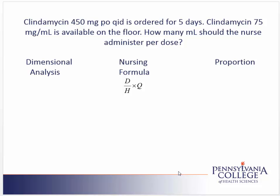We are doing a dosing problem. Let's read the problem. Clindamycin 450 milligrams orally four times a day is ordered for five days. Clindamycin 75 milligrams per milliliter is available on the floor. How many milliliters should the nurse administer per dose?